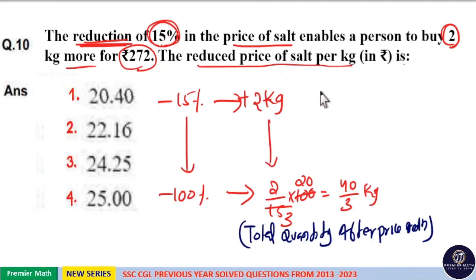Now 40 by 3 kilogram is the total quantity after price reduction, and 40 by 3 kilogram price is equal to Rs.272.